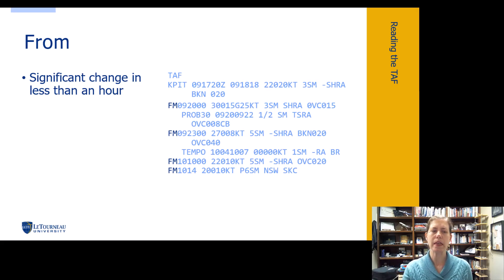So what does from indicate for us? From tells us that they're expecting, we've got four of them here plus the one here that's unwritten from. So we really have five from periods here. That is where we expect the prevailing conditions to change rapidly in a period of less than one hour. So we have a significant change that is going to change rapidly in a period of less than one hour.